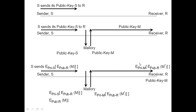The receiver thinks it is decrypting with the public key of S, but actually it is encrypted with the private key of M and it is decrypting with the public key of M. So it decrypts that outer layer and further decrypts with its own private key, getting M prime. If this was encrypted with the private key of S and you try to decrypt with the wrong key, you would get garbage — you have to use the right key, and here the right key has been used: it was encrypted with Malorie's private key and the receiver uses Malorie's public key to decrypt.